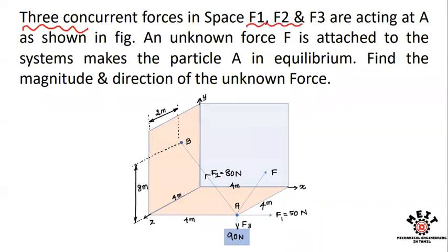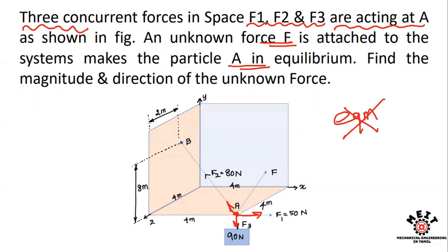Three concurrent forces F1, F2, and F3 are acting at point A. An unknown force F is attached to the system to make particle A in equilibrium. Without F, the system is not in equilibrium. With F as an unknown force, the system is in equilibrium. Find the magnitude and direction of the unknown force.